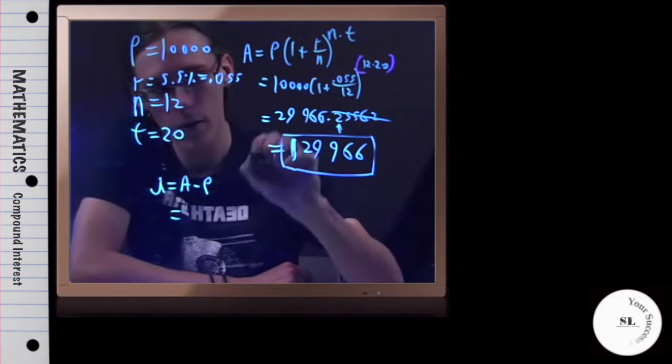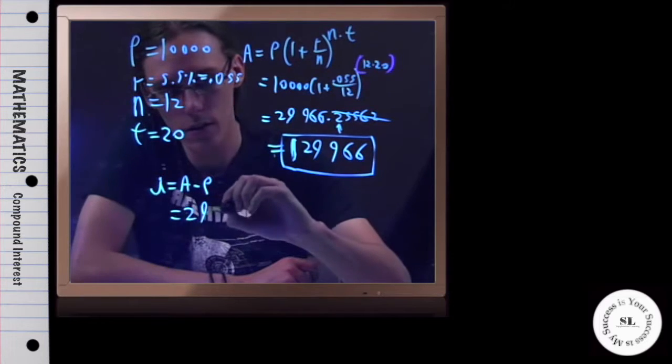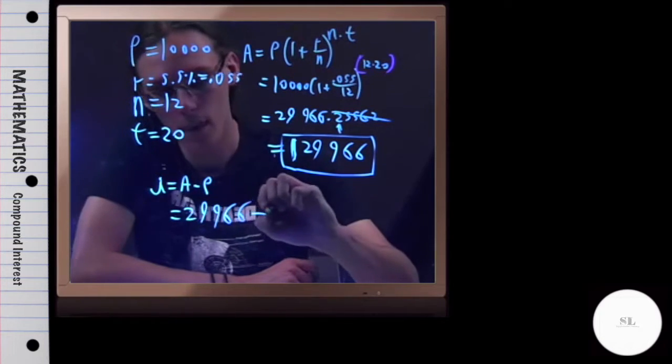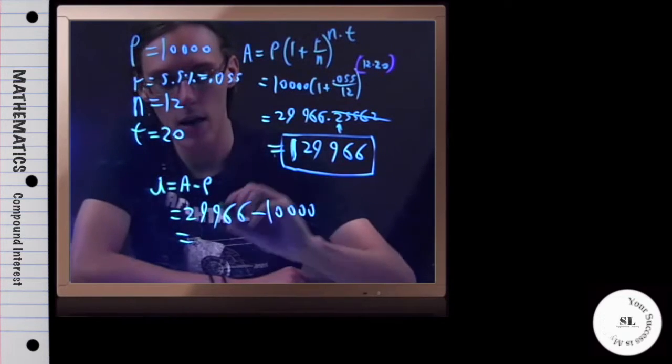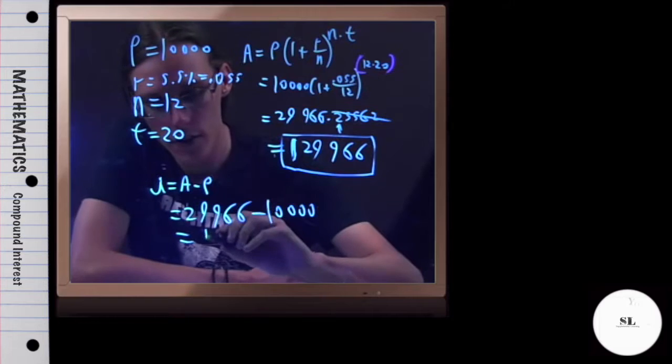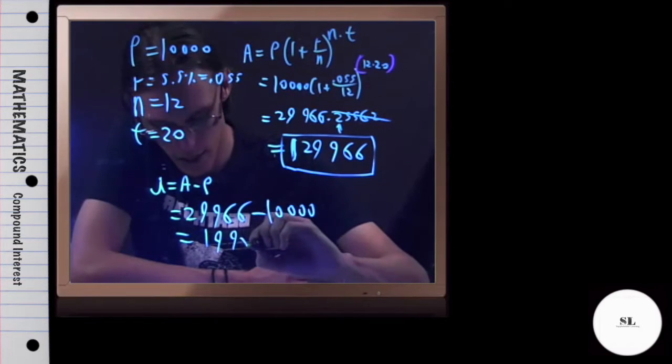So, our final amount, our future value, is $29,966, and our principal was $10,000. So, how much did we earn in interest? Well, we earned $19,966.